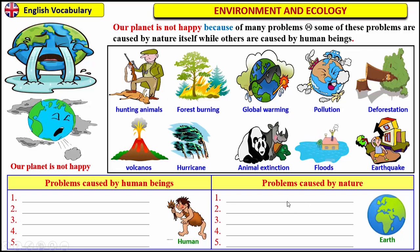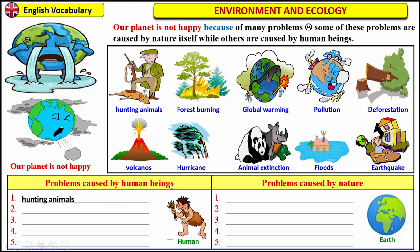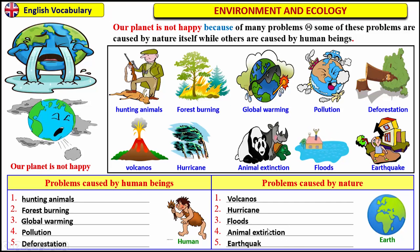You should classify them in the chart below. I'll give you the first example and you can pause the video and do the rest. For problems caused by human beings, we have hunting animals because humans kill animals. Pause the video and do the rest of the exercise. Problems caused by human beings are: hunting animals, forest burning, global warming, pollution, deforestation. Problems caused by nature are: volcanoes, hurricane, floods, animal extinction and earthquake.